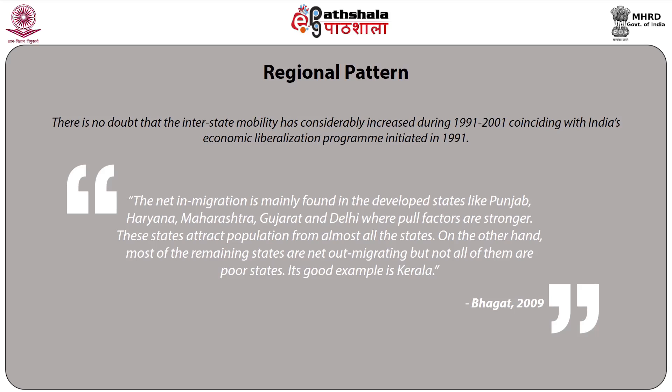Net in-migration is mainly found in developed states like Punjab, Haryana, Maharashtra, Gujarat, and Delhi, where pull factors are stronger. These states attract population from almost all other states. On the other hand, most of the remaining states are net out-migrating, though not all of them are poor states — Kerala being a notable example.